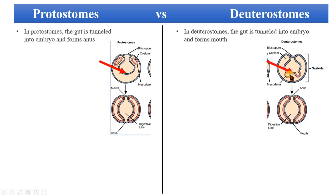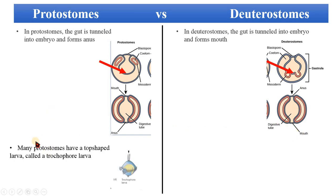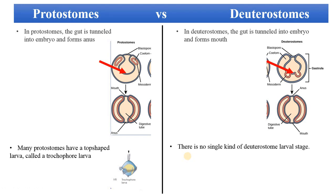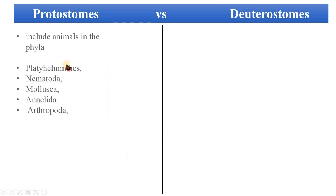Many protostomes have a top-shaped larva known as the trochophore larva, and you can see its diagram here. In the case of deuterostomes, there is no single kind of deuterostomic larval stage, so it cannot be shown in one diagrammatic form because there are many kinds of deuterostomic larval stages.